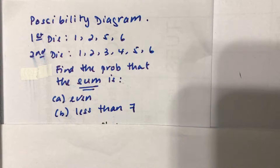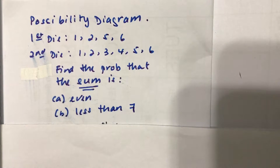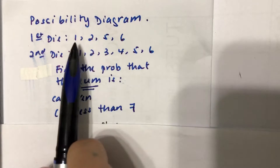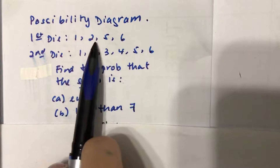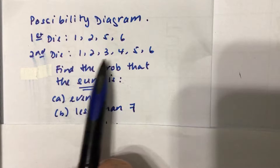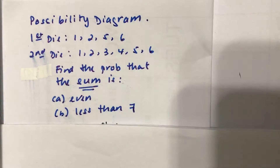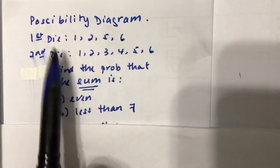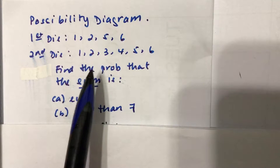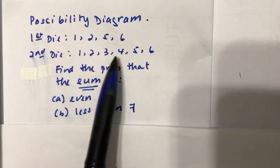Let's consider a case where we have two dice. The first one is a tetrahedral die, meaning that there's only four sides to it, and there are four numbers listed on it: one, two, five, and six. The second die is the normal regular die that you have, so one, two, three, four, five, six are the numbers printed on it. These are all equally likely to happen. So the first one has four numbers and the second one has six numbers.